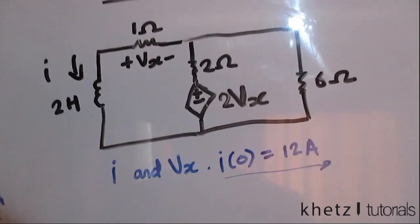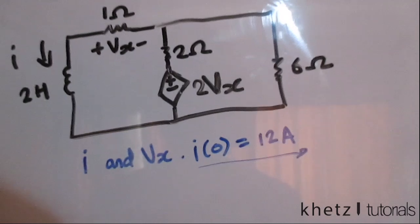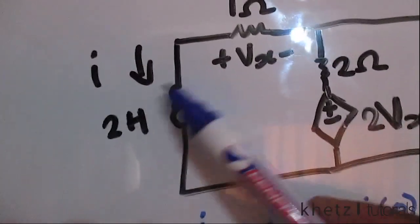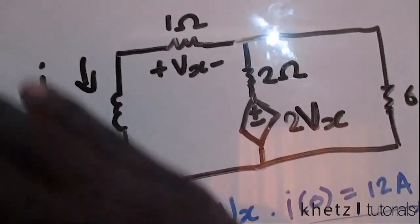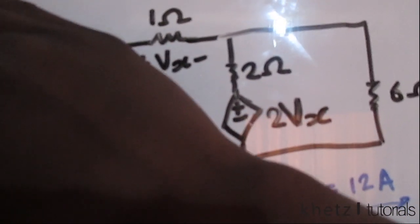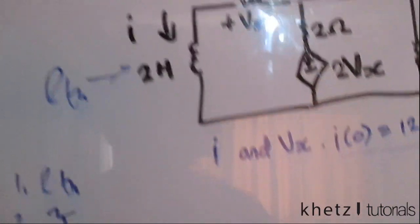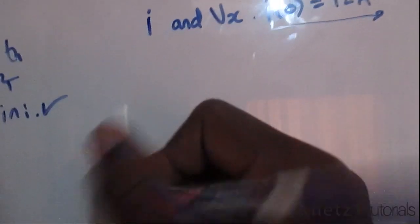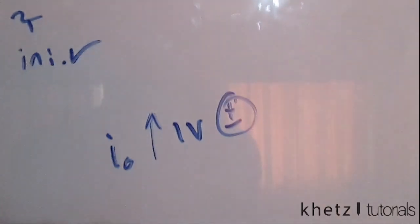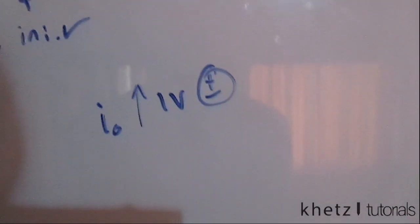We need to find Rth with respect to the storage element and the time constant. Since we have a dependent source, as covered in chapter four, we introduce a test source. We take the inductor out — it becomes an open circuit — and we introduce a test source of one volt, with a current io going up. This external excitation is necessary because of the dependent source.